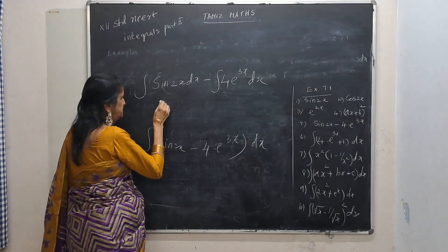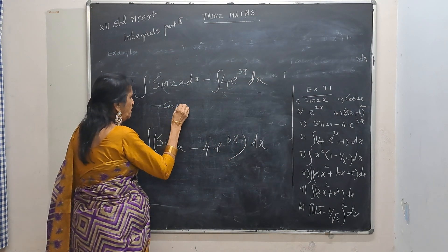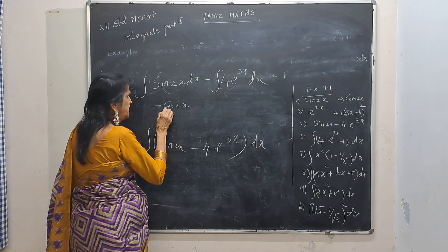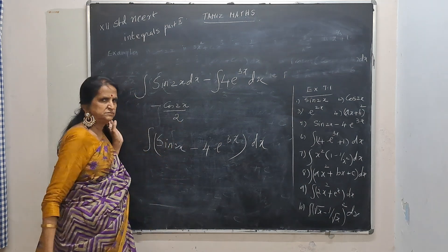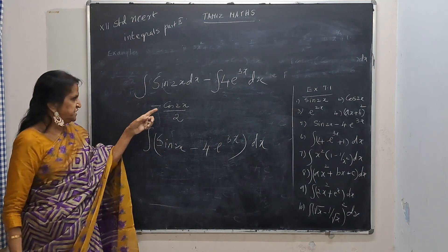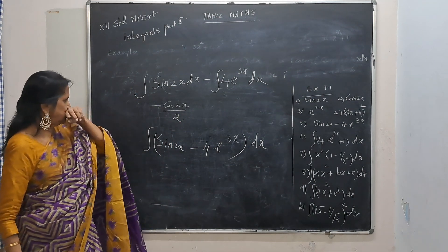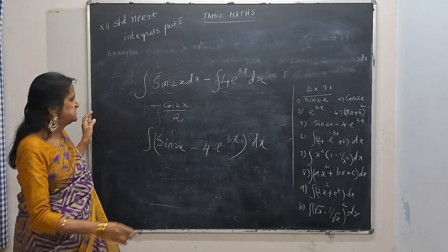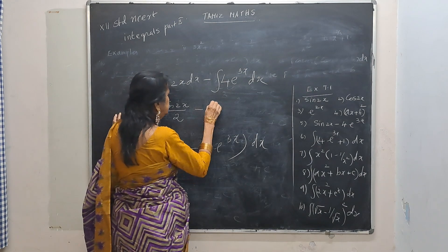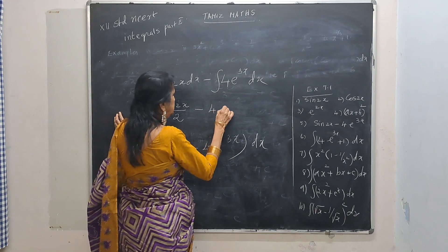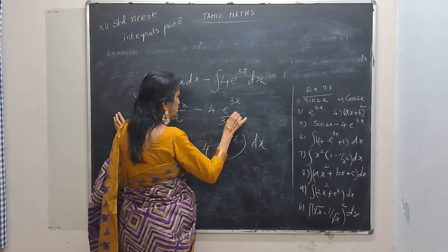Sin gives minus cos 2x divided by 2. Differentiate this: the minus sign will come, so that becomes plus. Minus: 4 is outside, then e to the power 3x divided by 3. Plus c.